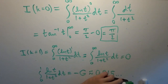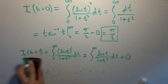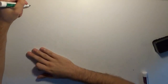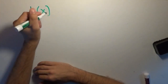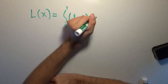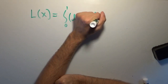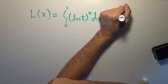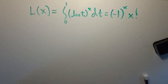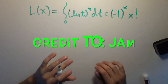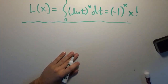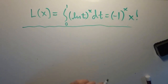Before finishing, I want to address something from the comments on the last video. I proved that capital L(x) — the integral from 0 to 1 of ln(t)^x dt — equals (−1)^x · x!. A commenter pointed out that you can see it must be related to the factorial simply by doing integration by parts.